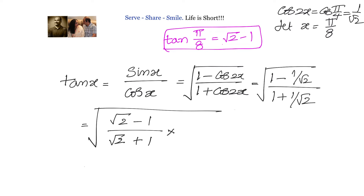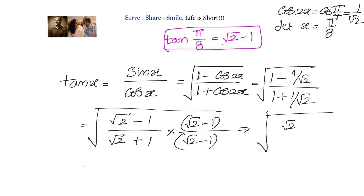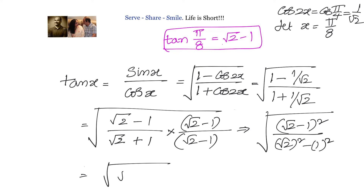To rationalize, multiply numerator and denominator by (√2 − 1). We get √((√2 − 1)² / ((√2)² − 1²)) = √((√2 − 1)² / (2 − 1)) = √2 − 1. So tan(π/8) = √2 − 1.